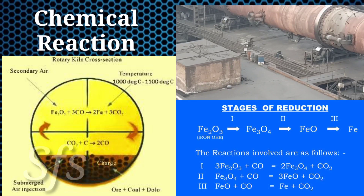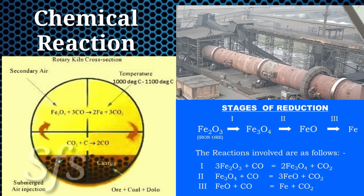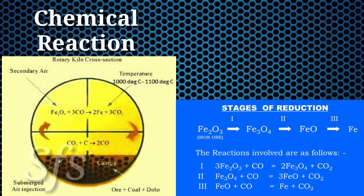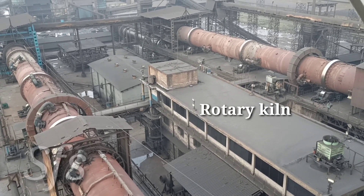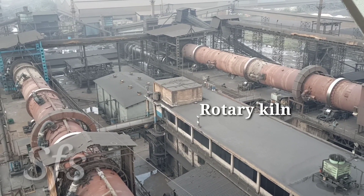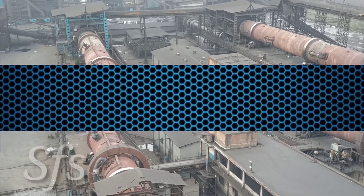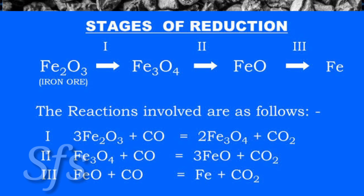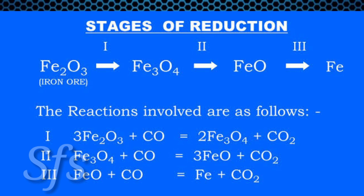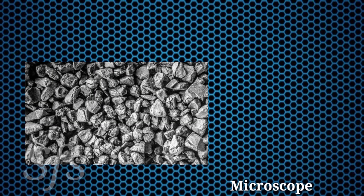This is a rotary kiln — you can see on the left side of the screen a cross-section image. At a temperature of around 1000 to 1100 degrees centigrade, iron ore, coal, and dolomite are heated in the rotary kiln. Fe2O3 is the iron ore hematite, from which oxygen is removed during this process. Carbon monoxide, obtained from the burning of coal, is used for reduction. In the first stage, Fe2O3 is converted into Fe3O4, then into FeO, and finally into Fe.